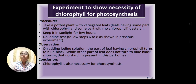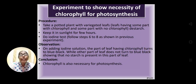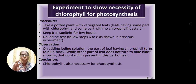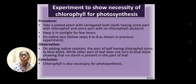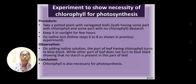Variegated leaves are leaves with patches of different colors — some portions are green, some yellow, some red or brown. Such leaves are known as variegated leaves. This means some parts have chlorophyll and some other parts do not have chlorophyll. We keep this plant under sunlight for a few hours, then carry out the iodine test.